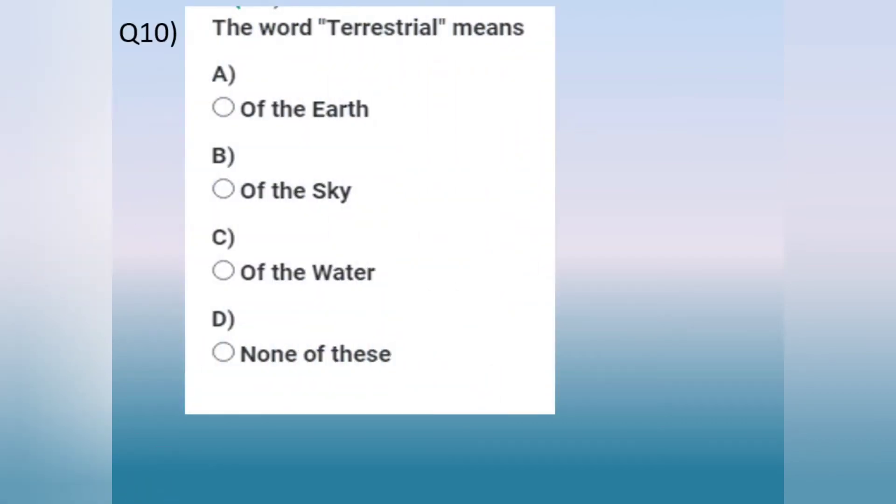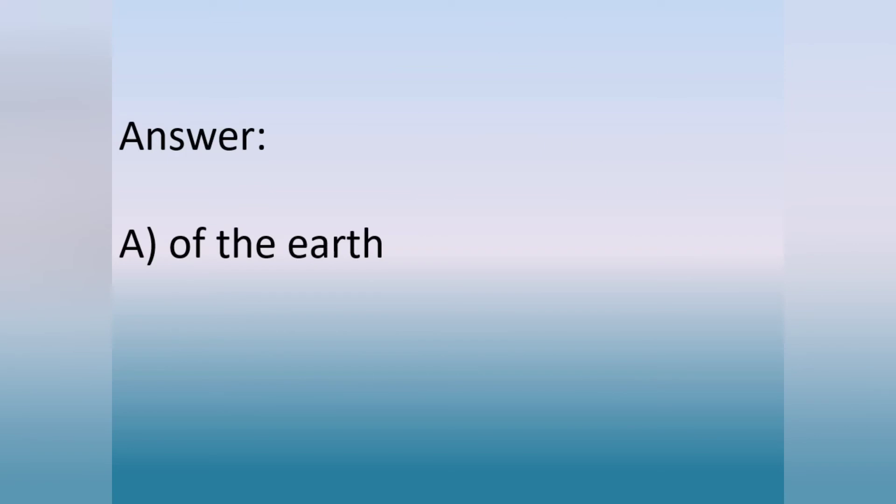Question number 10. The word terrestrial means dash. Option A. Of the earth. Option B. Of the sky. Option C. Of the water. Option D. None of these. The answer is option A, of the earth.